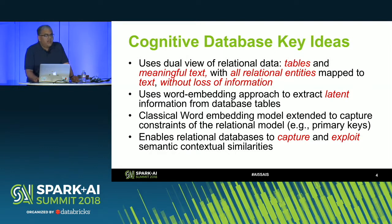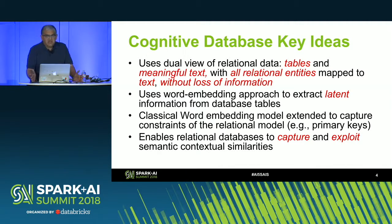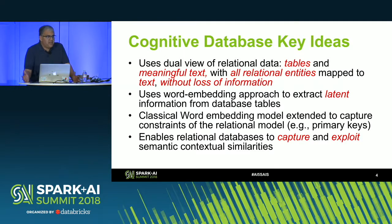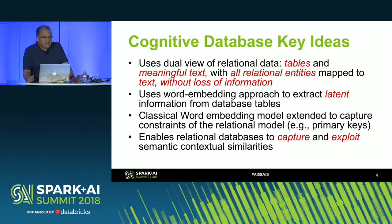In the cognitive database, we use the word embedding approach to support a dual view of relational data. We use the table as a classical relational table, but also as meaningful text, where all relational entities — irrespective of type, whether text, numeric, SQL date, or images — are mapped to text. This textification process converts data into text without loss of information from the original table.